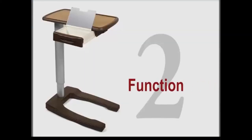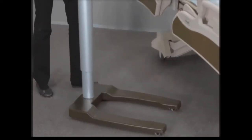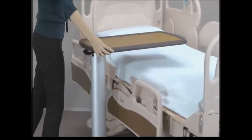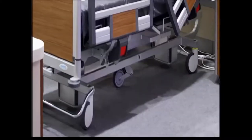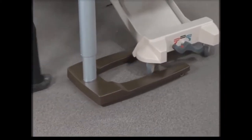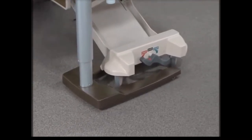2. Function. Overbed tables need to work around many makes of hospital beds. For example, some beds have a fifth wheel centrally located under it. Hence, our U-shaped base which is designed to straddle this wheel.